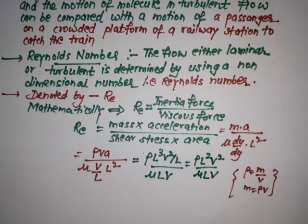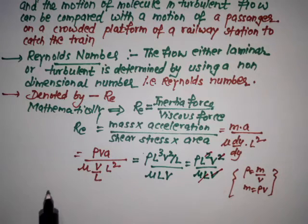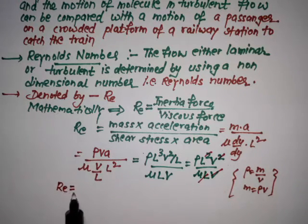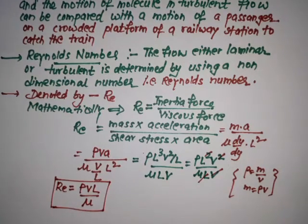Cancel out the common terms—L with this, V with it—so finally we get Reynolds number that is equal to ρVL/μ.